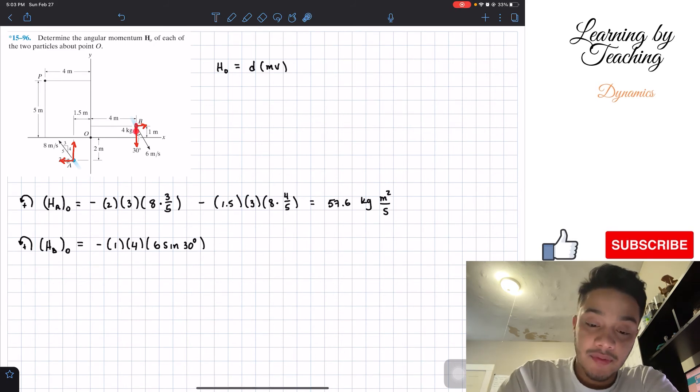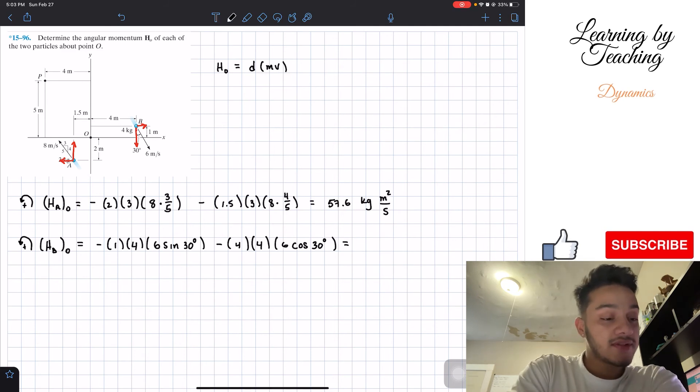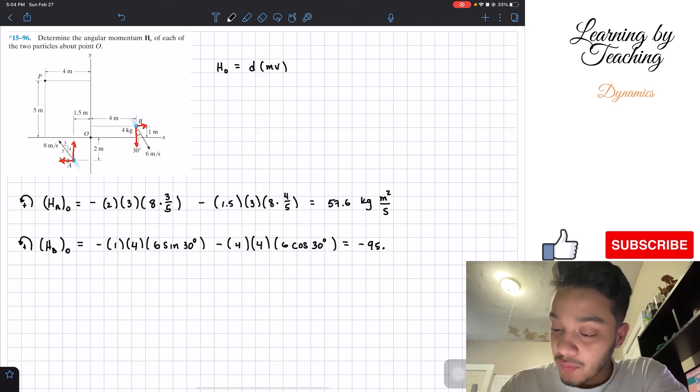Then we're going to do the same thing for its y component. Since I'm holding here, I like to think of it as holding here and having a force pushing this way. Then our angular momentum will be clockwise again, so negative. The distance is four meters multiplied by its mass, which is four kilograms, times its velocity, which is six multiplied by the cosine of the 30 degree angle. If we plug this into our calculator, we'll get a total of negative 95.1 kilogram meter squared per second.